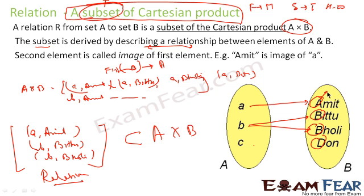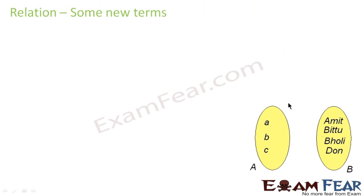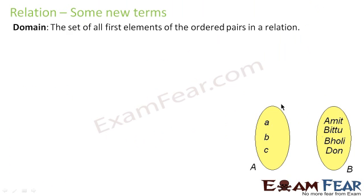A relation is nothing but a subset of Cartesian product. To create a relation — to create a subset — there should be a relationship between A and B. Here the relationship is that for elements in B, the first letter of the element should equal the corresponding element of set A.